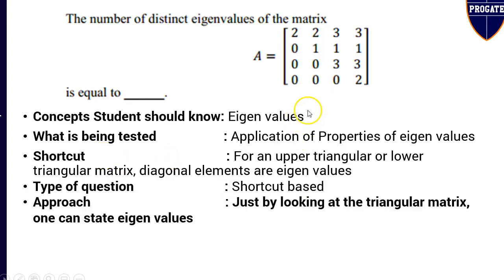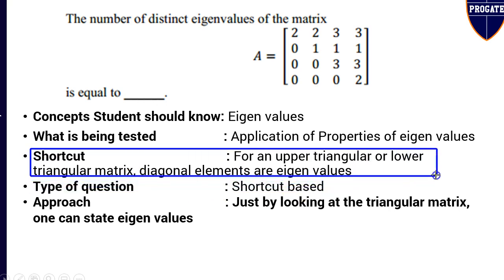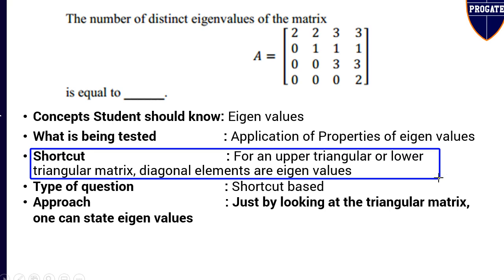The concept the student should know is eigenvalues. What is being tested in this question is the application of properties of eigenvalues. The shortcut to solve this question is: for an upper or lower triangular matrix, the diagonal elements are the eigenvalues. Without any mathematical calculations, just using this simple property, the answer can be found. This is a shortcut-based question.